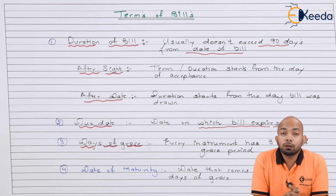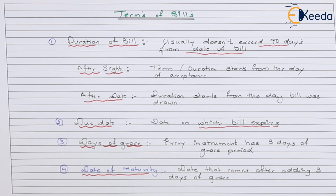The last terminology is the date of maturity. This is arrived at by adding three days of grace to the previous due date. So if the bill was supposed to expire on the 1st of January, adding three days gives us the 4th of January — that 4th of January is the date of maturity. This is how you deal with the terminologies of bills of exchange.